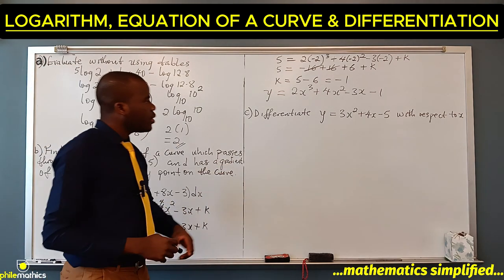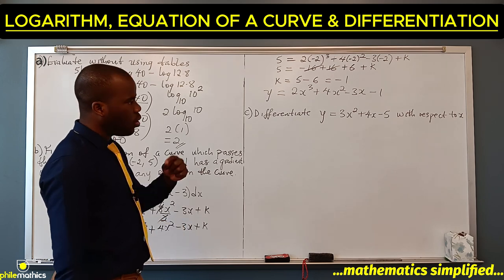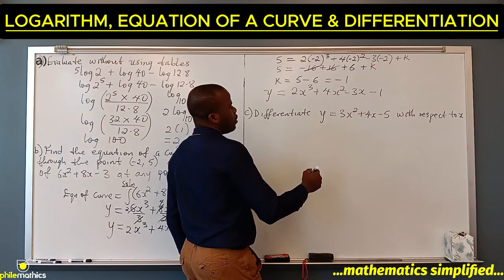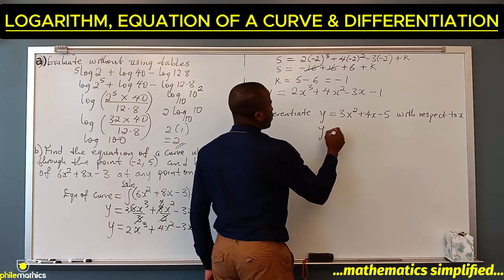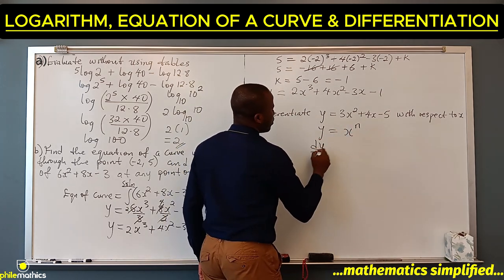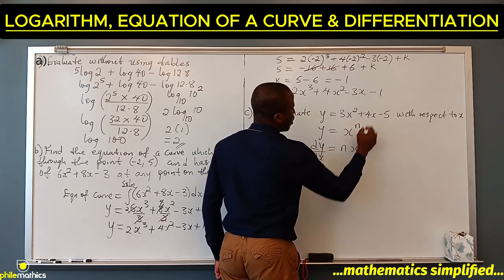Part C says differentiate y equals 3x square plus 4x minus 5 with respect to x. Remember our differentiation formula: if y equals x to power n, then dy/dx is n times x to power n minus 1.